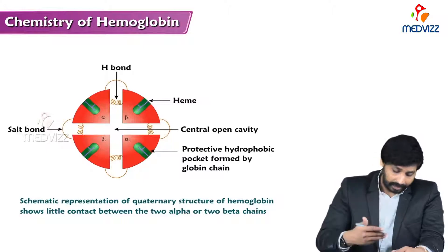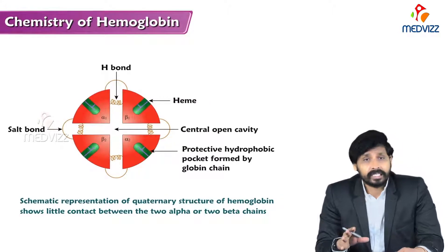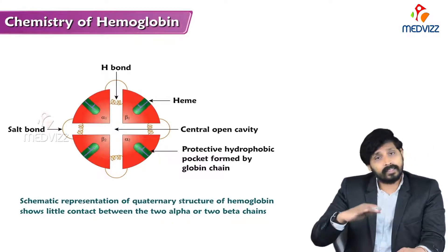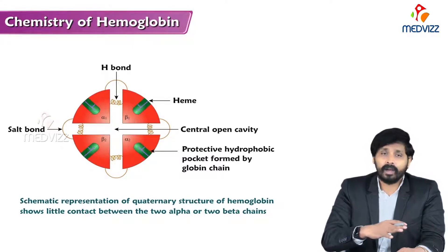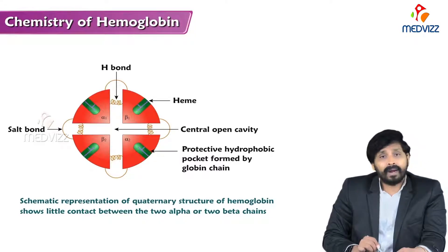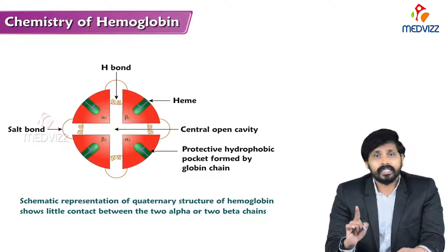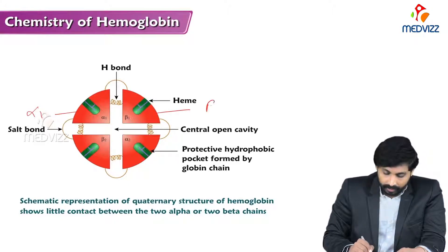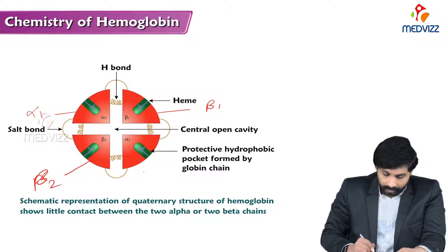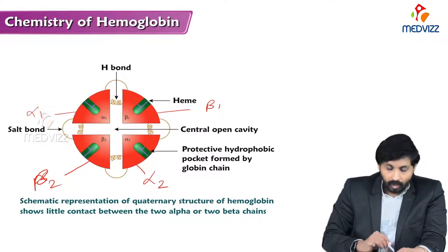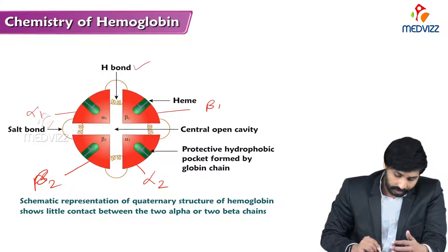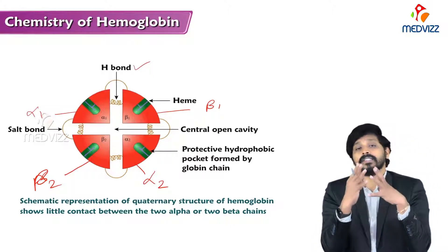Looking at the diagrammatic representation, you can see how all four polypeptide chains are joined. The red color represents the protein part and the green color represents the non-protein part (heme), so each protein subunit has a heme group. This gives us alpha-1, beta-1, beta-2, and alpha-2 joined together by non-covalent bonds such as hydrogen bonds and salt bridges, with a central cavity.